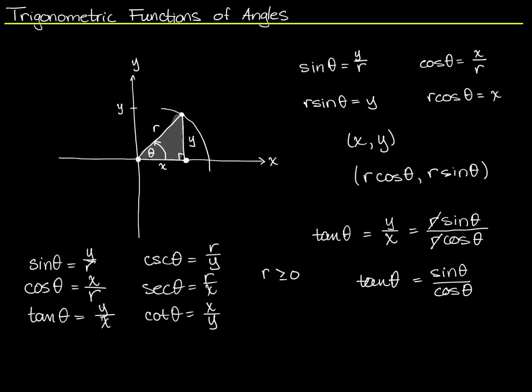But we also need to make the observation that X could theoretically be zero, and Y could theoretically be zero, and that would cause problems here and here, as well as here and here. So we're also going to say that X cannot be zero, and Y cannot be zero. Now that's really just for this notation here.